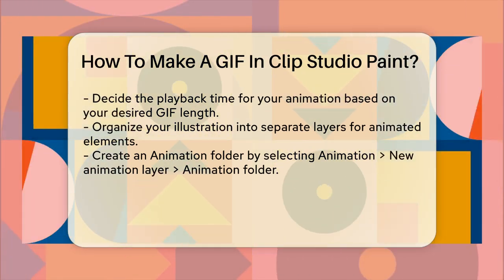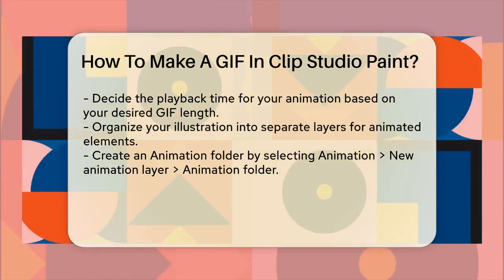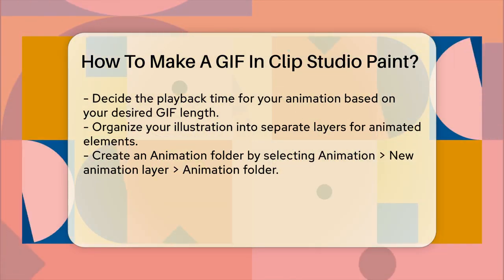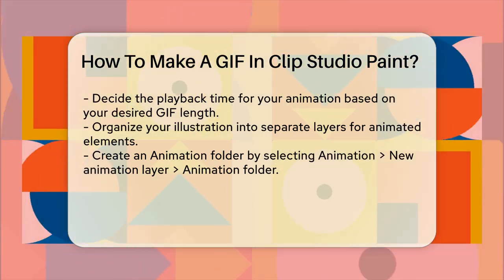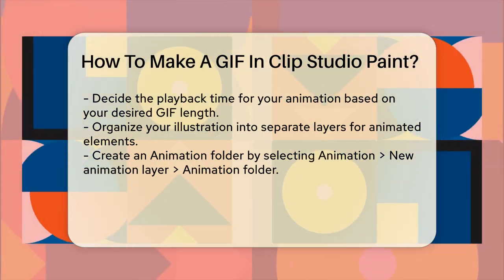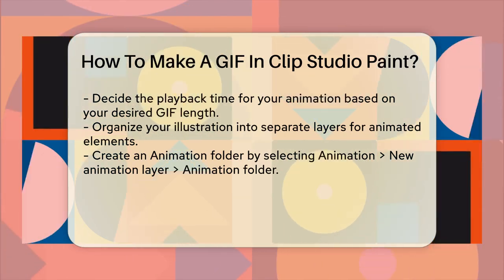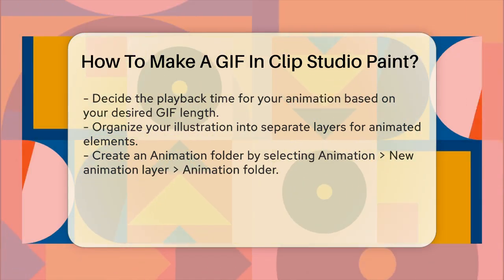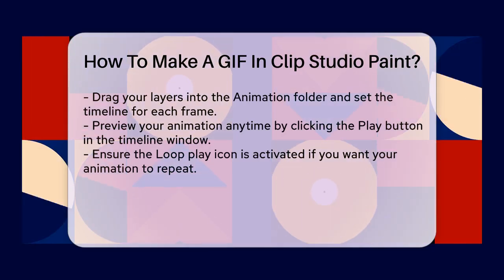Now it's time to animate your layers. Start by organizing your illustration into separate layers, especially for elements you want to animate, like eyes or moving parts. For instance, if you want to make a character blink, you'll need to create separate layers for the eyes and adjust them frame by frame.